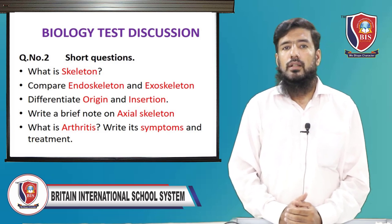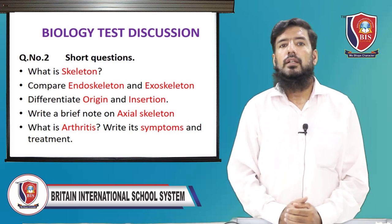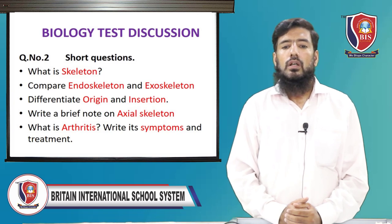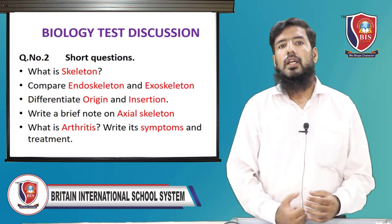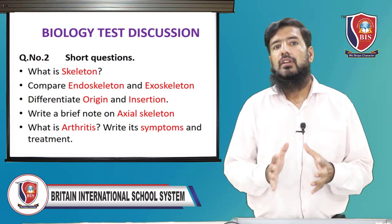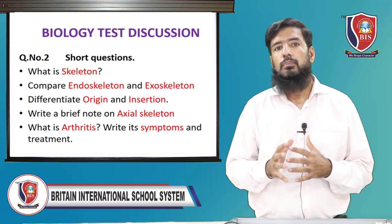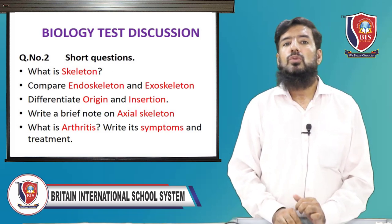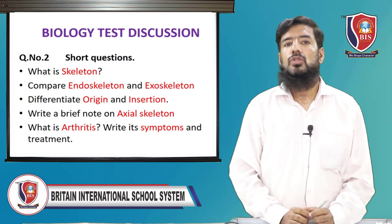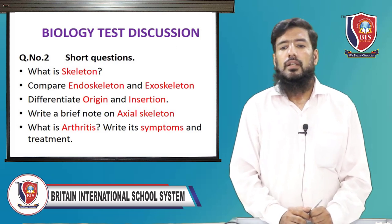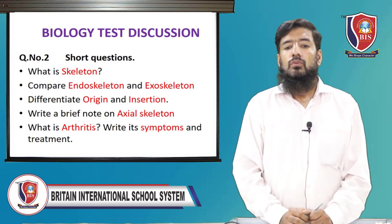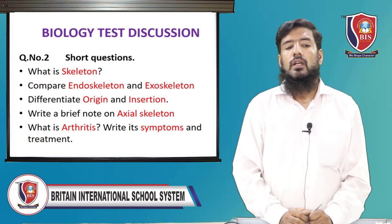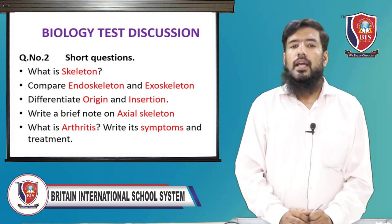Short question: write a brief note on axial skeleton. We just studied that the axial skeleton has 80 bones. You need to describe its 5 remaining components one by one and also mention the number of bones in each component.